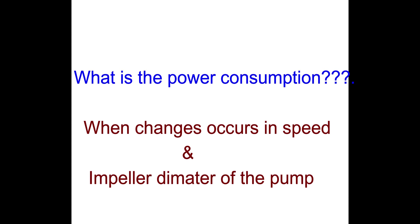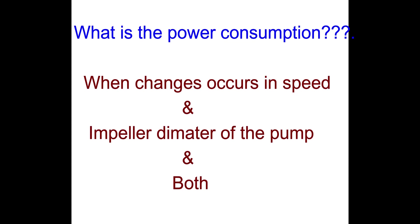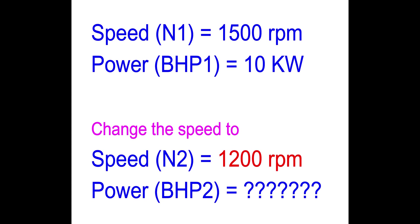Hi friends, welcome to Met Plaza. Today we are going to learn about pump affinity laws. Understanding this thoroughly will help you determine power consumption when running a pump at two different speeds. For example, imagine you are running a pump at 1500 RPM and the pump is drawing 10 kW. Once you reduce the RPM to 1200, what would be the power consumption? This law will help us determine that.